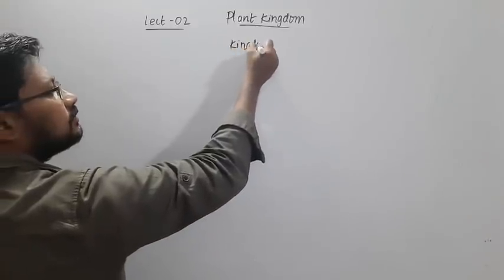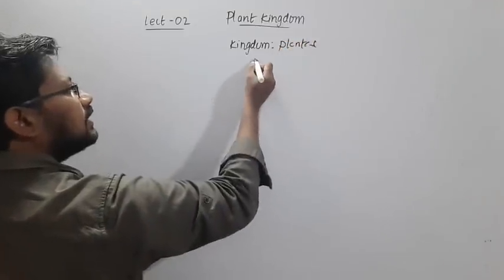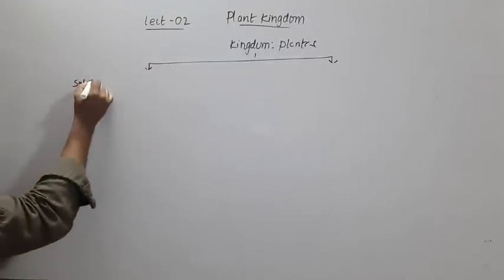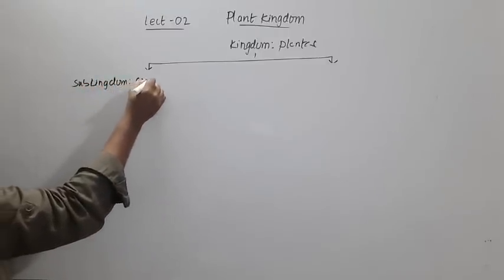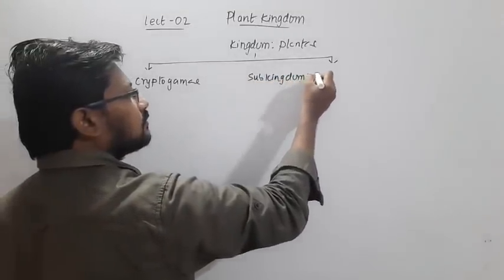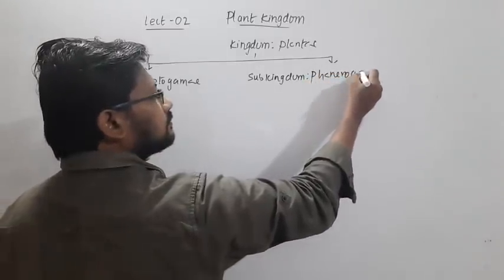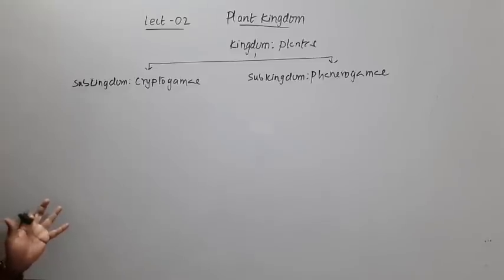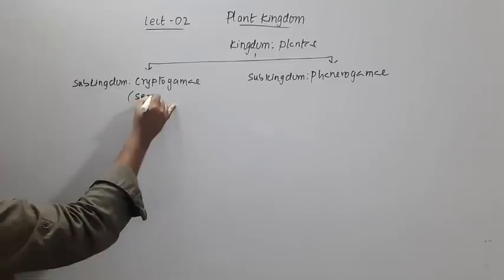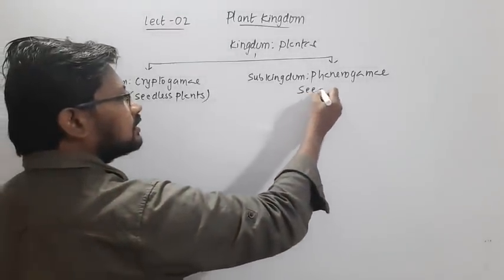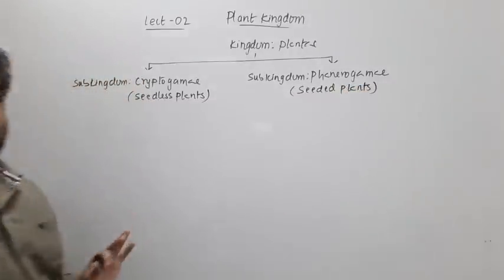Kingdom Plantae is divided into two sub-kingdoms: sub-kingdom Cryptogamae and sub-kingdom Phanerogamae. Cryptogamae includes seedless plants, whereas Phanerogamae includes seeded plants.